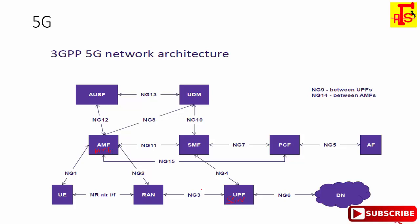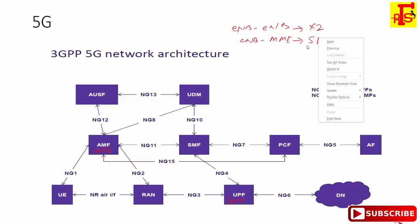Similarly, in LTE the interface between eNodeB and eNodeB is X2, and the interface between eNodeB and MME is S1. In 5G, these interfaces are replaced by XN and NG respectively. Here you can see that change.